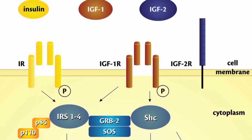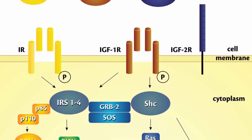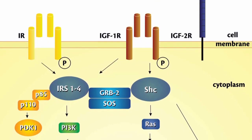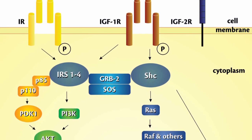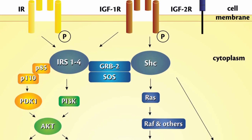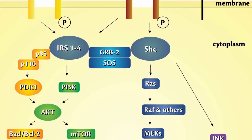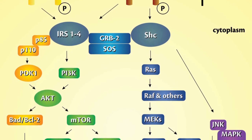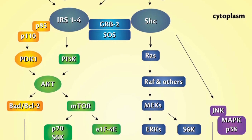Insulin and insulin-like growth factor, known as IGF-1, are two closely related hormones that play crucial roles in regulating various physiological processes in the body, including glucose metabolism and cell growth. The signaling pathways of insulin and IGF-1 are interconnected and share many common components. Insulin binds to the insulin receptor, which is a receptor tyrosine kinase — a transmembrane protein consisting of two alpha subunits and two beta subunits linked by disulfide bonds. IGF-1 binds to the IGF-1 receptor, which is also a receptor tyrosine kinase and shares structural similarities with the insulin receptor. Binding of insulin or IGF-1 to their respective receptors leads to autophosphorylation of specific tyrosine residues on the receptor beta subunits, which is crucial for initiating downstream signaling events.